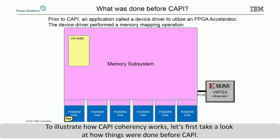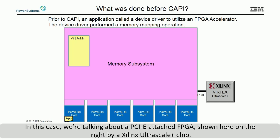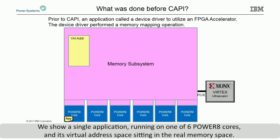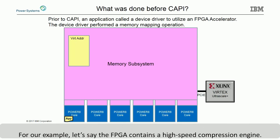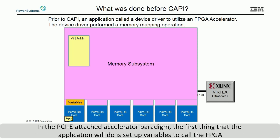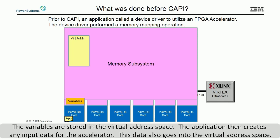To illustrate how CAPI coherency works, let's first take a look at how things were done before CAPI. In this case, we're talking about a PCIe-attached FPGA, shown here on the right by a Xilinx Ultrascale Plus chip. We show a single application running on one of six Power8 cores and its virtual address space sitting in the real memory space. The application doesn't need to know where the real address is located — it just knows that it has its own memory space. For our example, let's say the FPGA contains a high-speed compression engine.